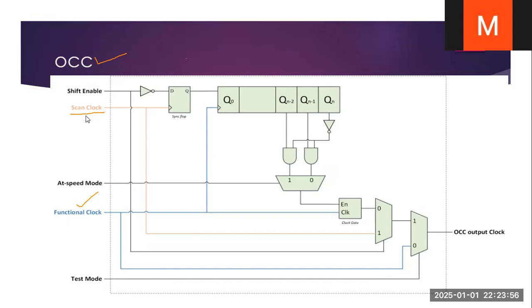For normal shift operation, scan enable is one. When scan enable is one, this becomes zero, so this part — zero — is passing here. Scan enable is one, so this is selected and the scan clock is selected and routed to the output. Because in test mode, TM is also one, so our scan clock is going to be pulsed when scan enable is one. This is the generalized architecture for OCC.